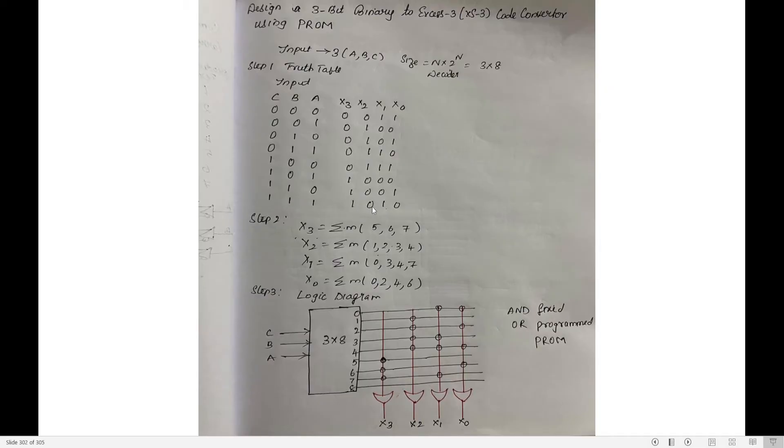Since we have up to 7, in the last entry we are getting a 1 in the highest bit position. That is the reason we are writing X0, X1, X2, and X3 as the output labels. Since there are 3 inputs, we have 000 to 111 — 8 combinations total.